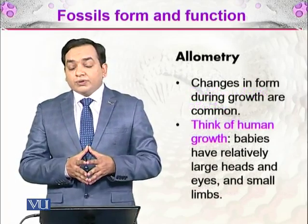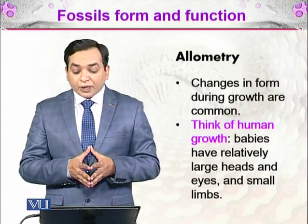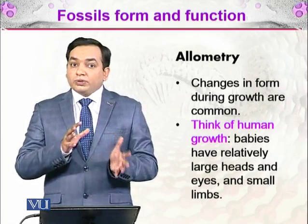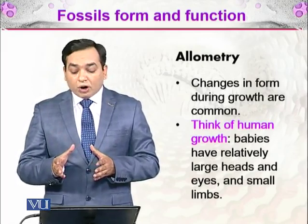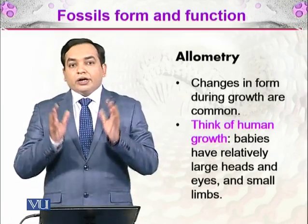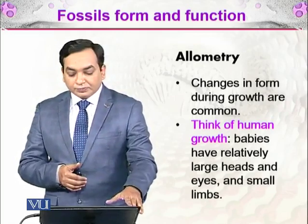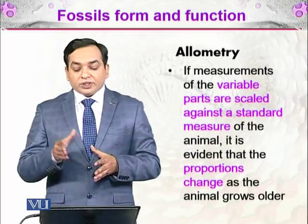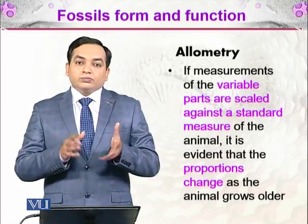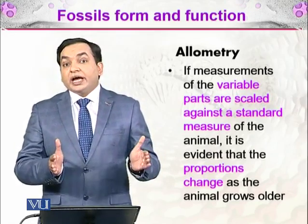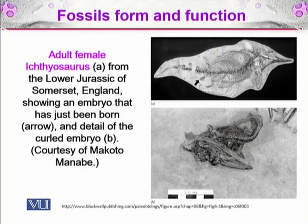There are changes in form during growth, and this function is called allometry. 'Allo' means different and 'metry' means measurement — the body measures differently at different stages of life. For example, in human growth, babies have relatively large heads, large eyes, and small limbs, but as they grow into adults the body proportions change. When measurements of variable parts are scaled against a standard measure of the animal, it is evident that proportions change as the animal grows older. This function is called allometry.